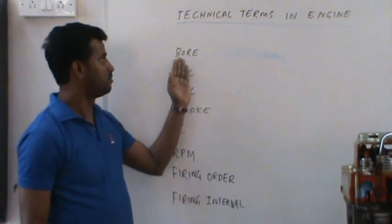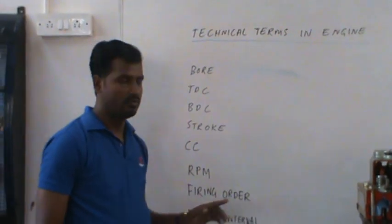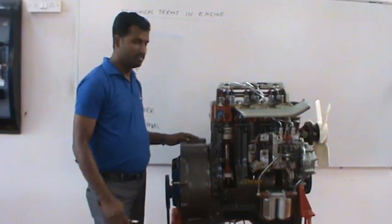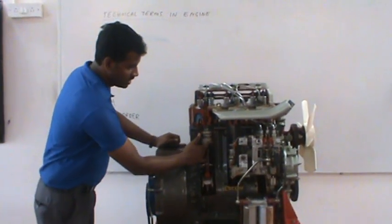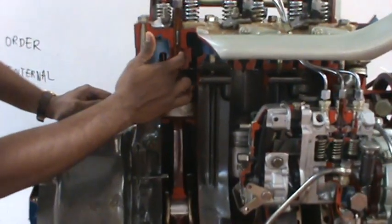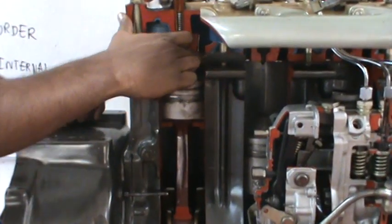Let us start from point number one, that is bore. We have one engine with us. This is a Power Track engine. The bore means this is a cylinder in the engine. The inner diameter of the cylinder, this area,